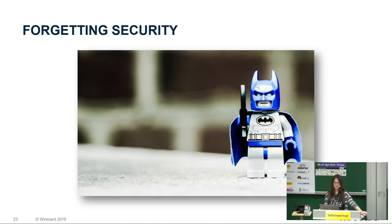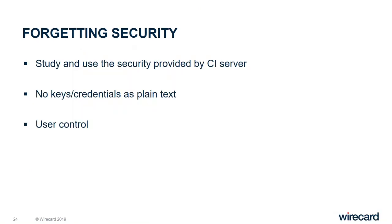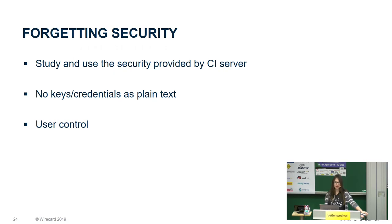Another thing which is important when configuring and using continuous integration is security. Different CI servers have different security problems or things you should pay attention to, so it's worth studying the security implications before you set one up and making sure you try to follow them. A common mistake is using keys or credentials as plain text so they are visible in the log — make sure you don't do that. In Travis, for example, there are encrypted variables; in Jenkins there is a credentials plugin. Also configure user controls so users who are not supposed to see or configure things cannot do so.